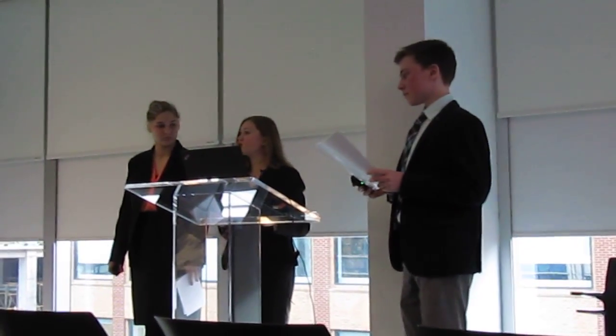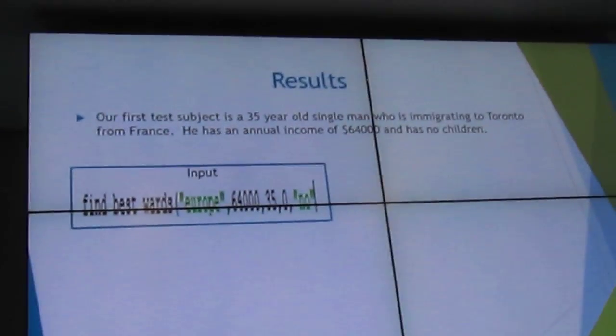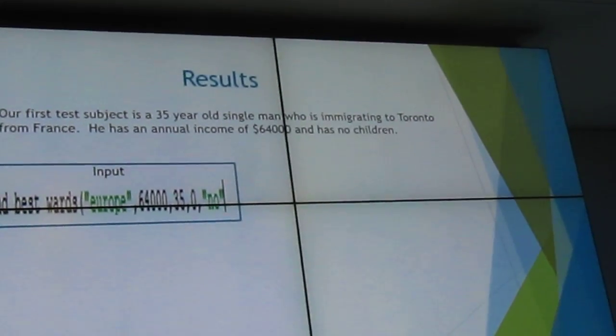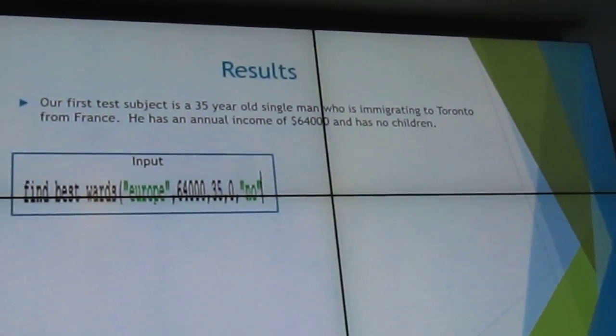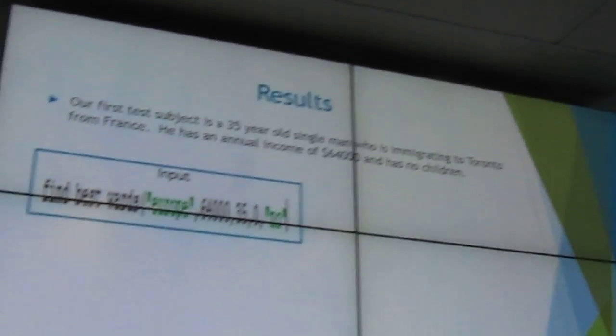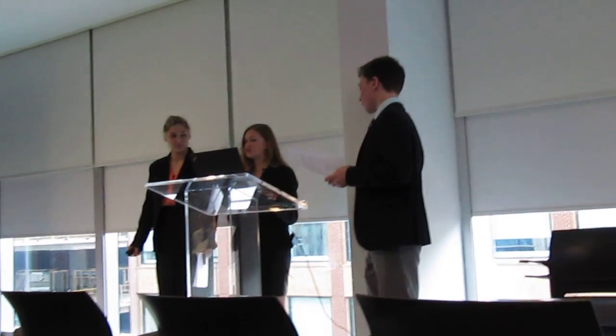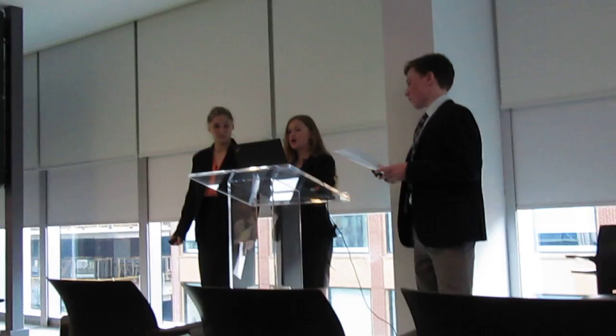Because we created the program, we needed to test it, so we did a couple of test subjects. The first is a 35-year-old single man immigrating to Toronto from France, with an annual income of $64,000 and no children. In the input, EUROPE stands for the area he comes from, followed by his income, his age of 35, zero for number of children, and NO to indicate we don't want to list all possible results. This graph shows all of the results and their scores.